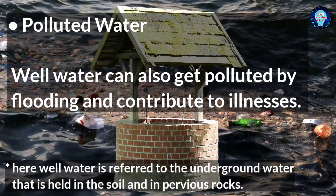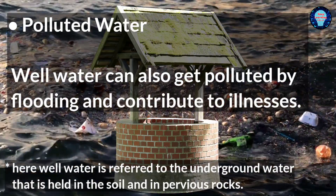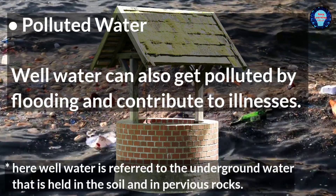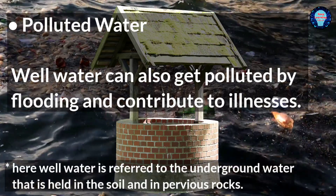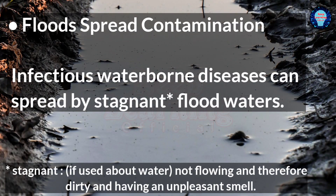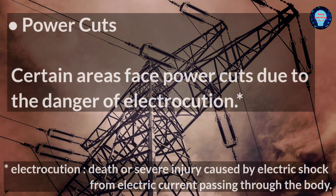Polluted Water: Well water can also get polluted by flooding and contribute to illness. Flood Spread Contamination: Infectious water-borne diseases can spread by stagnant flood waters. Power Cuts: Certain areas face power cuts due to the danger of electrocution.